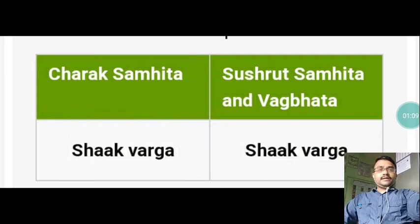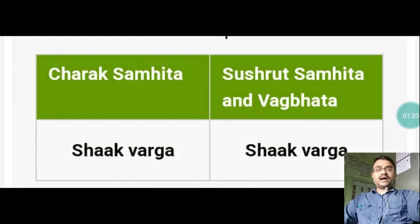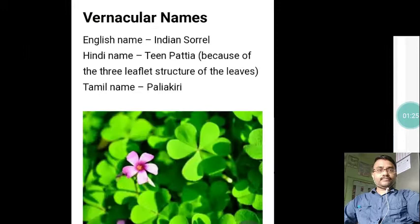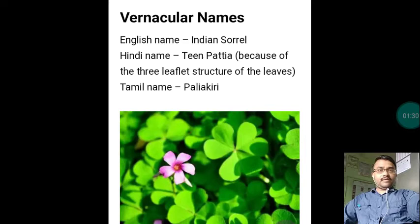The classical categorization of this drug — as per Charak Samhita, it has been included under Shakabarga, and in Sushrut as well as Bhavaprakash Samhita also, this drug has been included under Shakabarga. In English it is called Indian Sorrel, in Hindi it is called Tin Patiya because of the three-leaflet structure of the leaves. In Tamil it is called Palyakiri and in Assamese it is called Tenge Shihak.